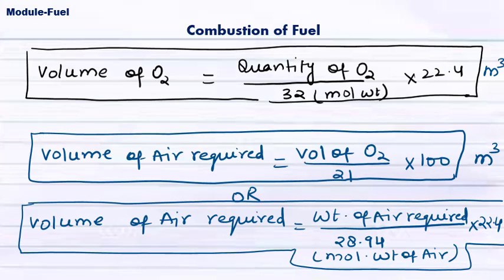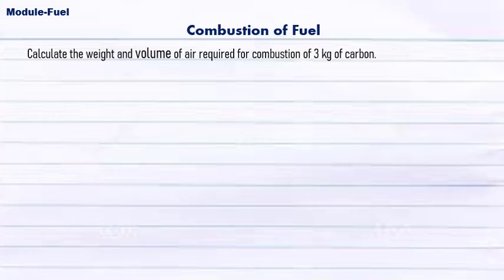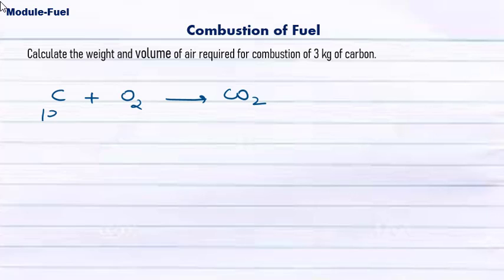Today we are going to solve our second numerical. The problem states: for combustion of three kilograms of carbon fuel, how much weight and volume of air is required? We know that for carbon, its reaction with oxygen shows that 12 parts of carbon will require 32 parts of oxygen for combustion.